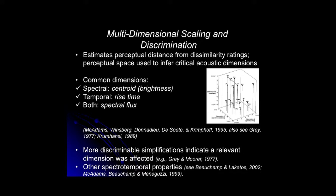One thing we found out comes from multi-dimensional scaling work — pairs of sounds were presented and listeners judged how similar they were. Taking all those ratings and throwing them to a computer program produces a simplified map with several axes, each showing something perceptually important. Over on the right-hand side is such a solution from McAdams et al., showing three dimensions. Taking that back to the acoustics, three parameters are identified: spectral centroid — basically where the center of the energy is with respect to frequency — which you can think of perceptually as the perception of brightness, or how much high-frequency content is present.